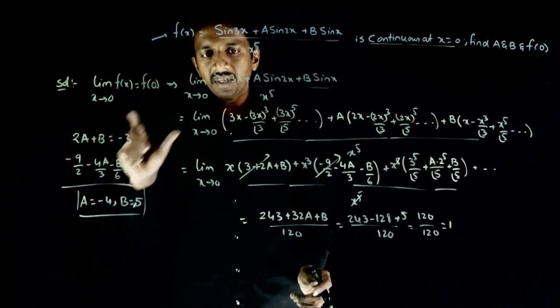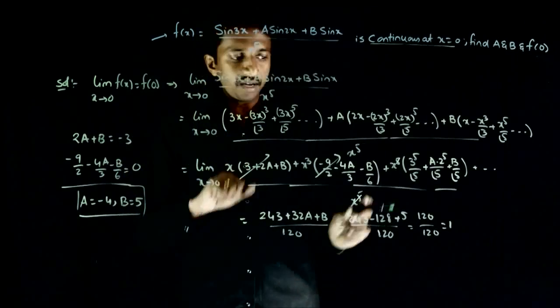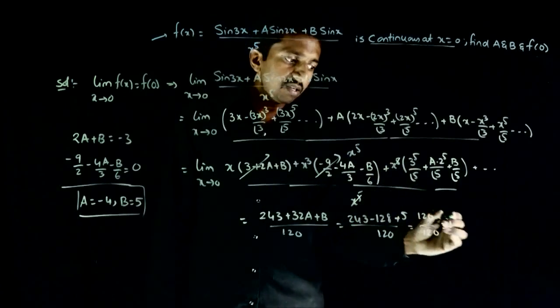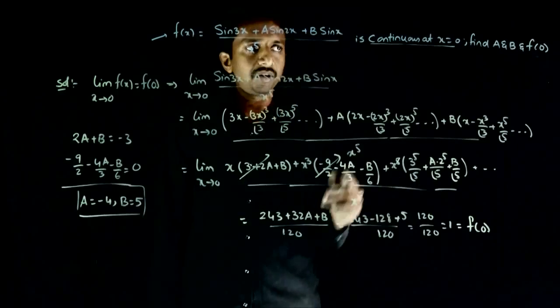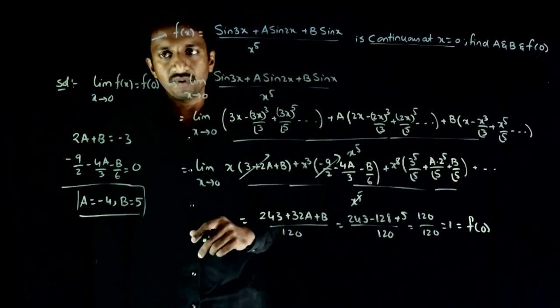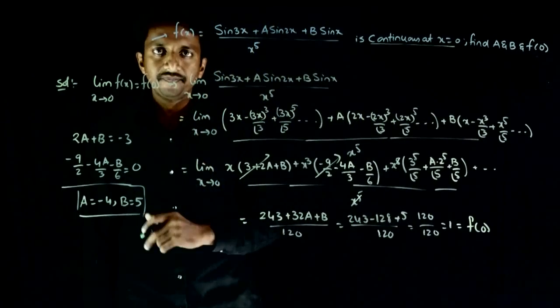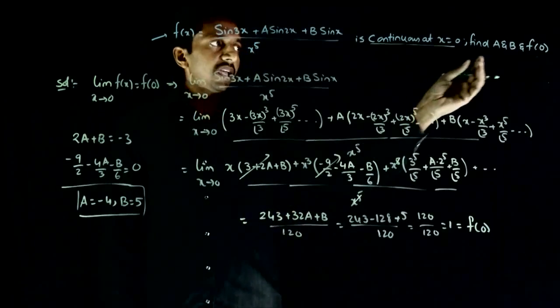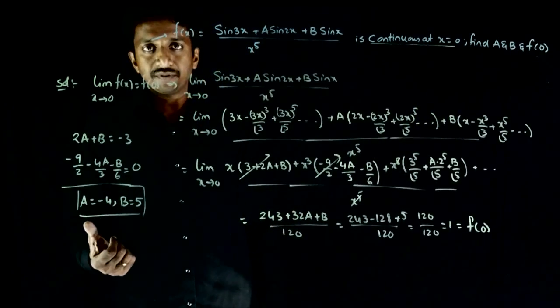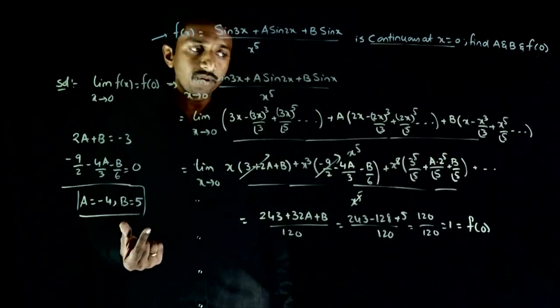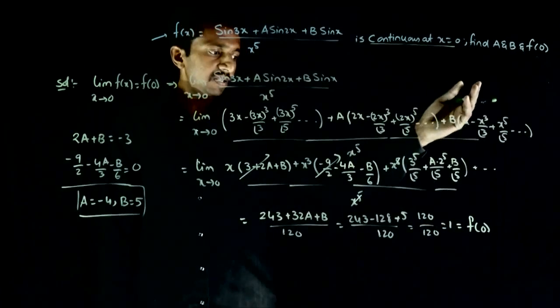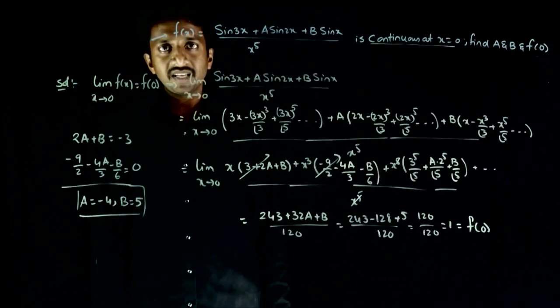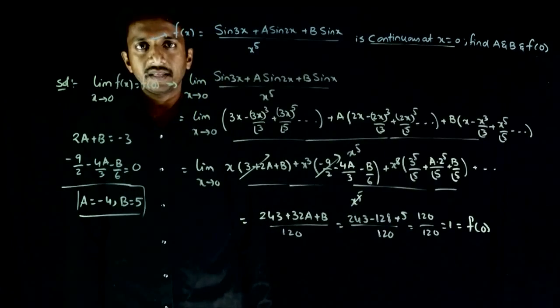And for these values of a and b, the limit is defined and the value of the limit is 1. This has to be equal to f(0) because f(x) is continuous at x equal to 0, from the first equation. So finally, a's value should be minus 4, b's value should be 5, and f(0) has to be 1. These are the 3 answers to this question. Thank you.